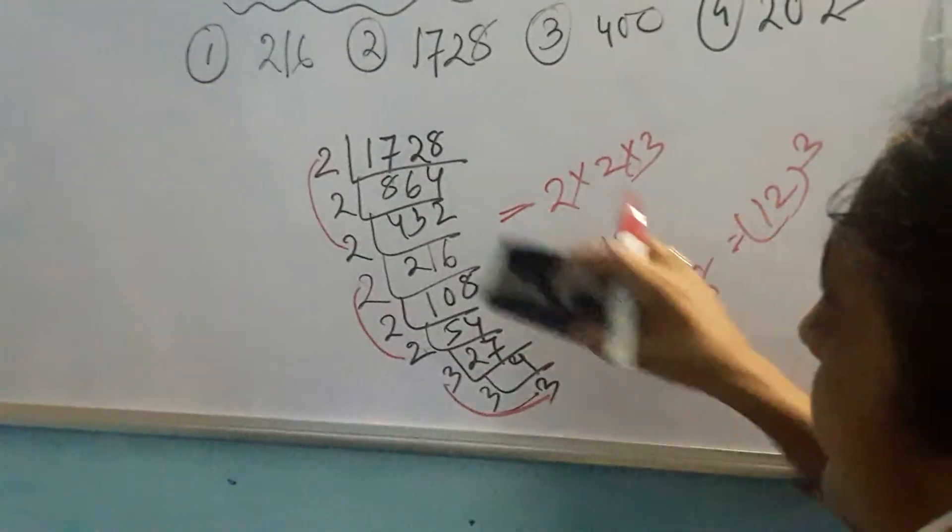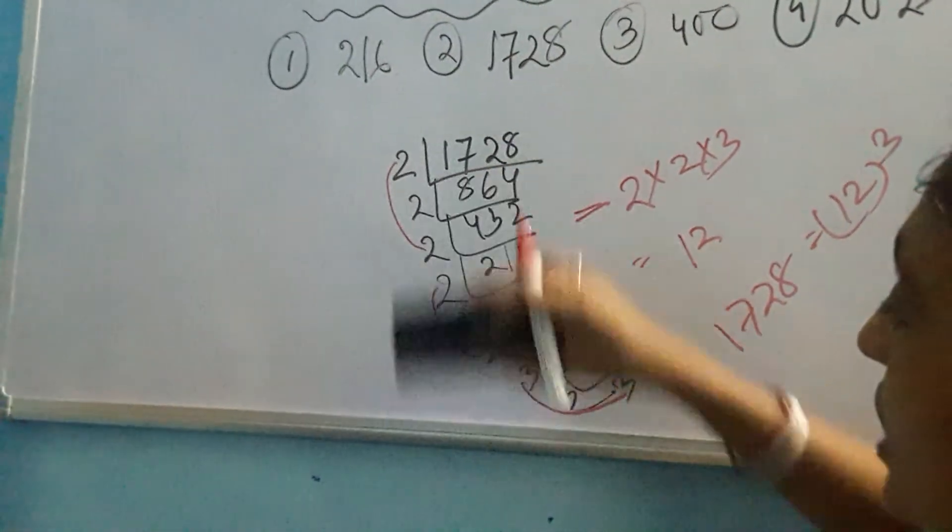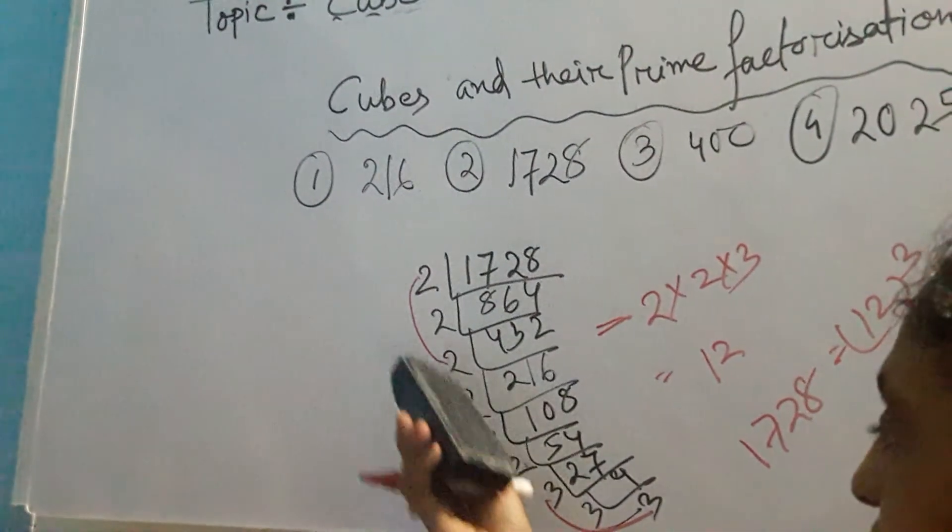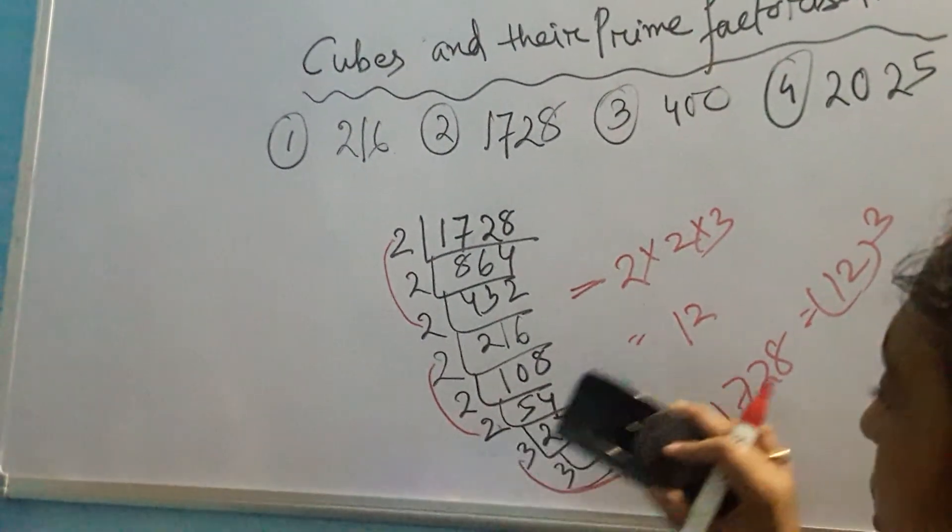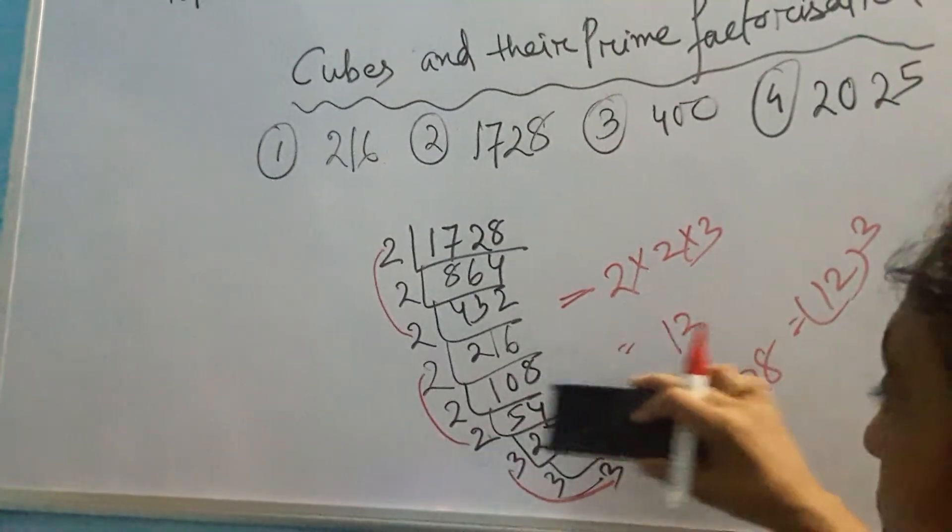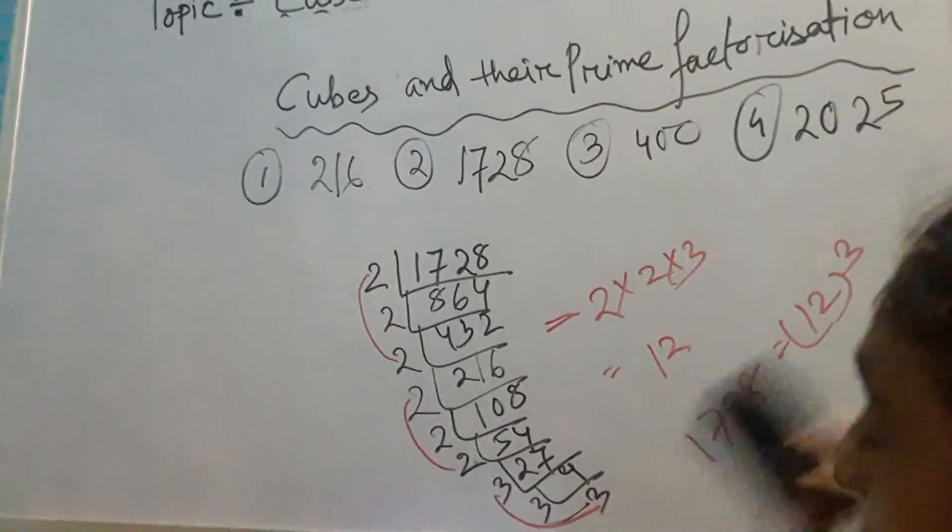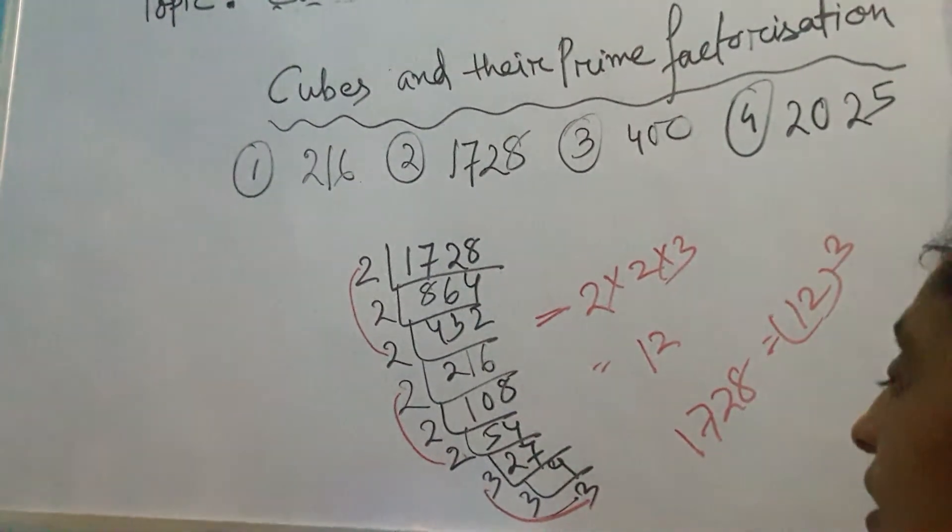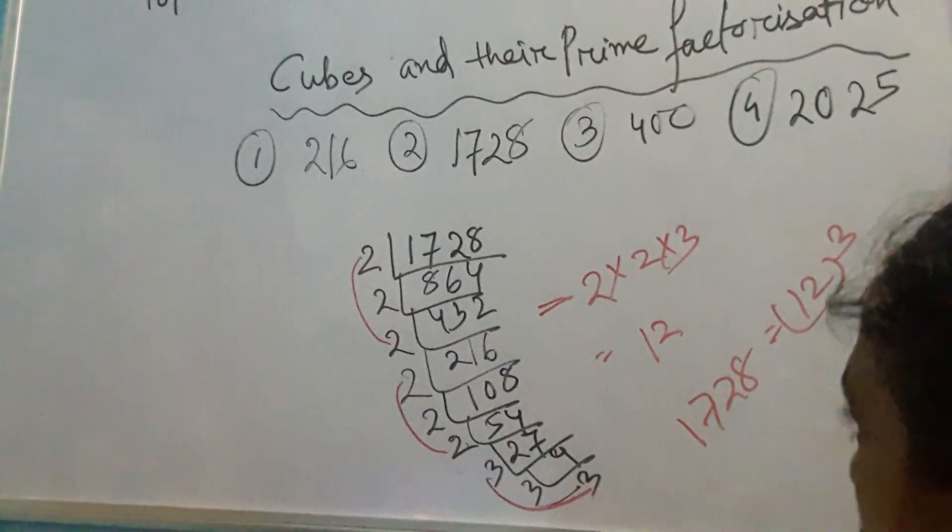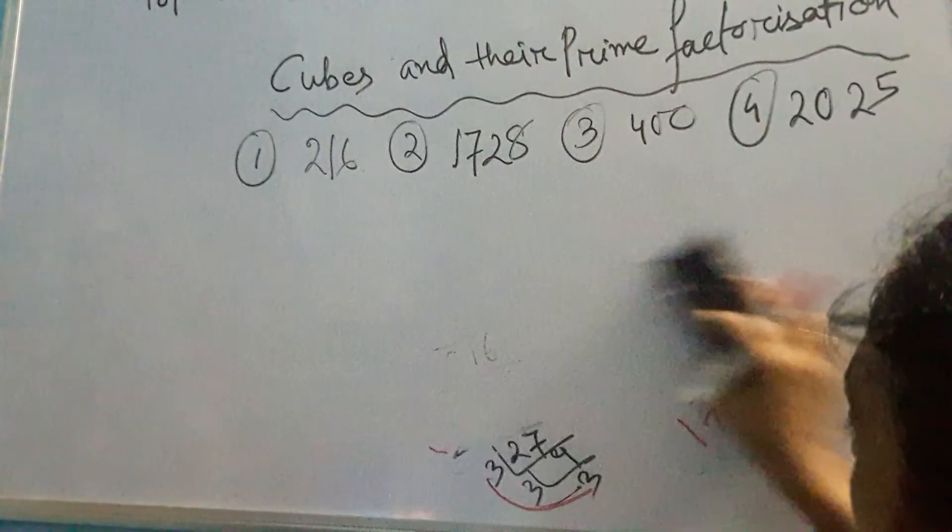Now come to the next one. In this case, you have seen none of the numbers were unpaired. All are there in 3, 3. In each group, there were 3, 3. So we have taken that 1, 1 from each group and we have found out that yes, this is a cube of that particular number. But when we are not getting a complete group, that time we can say it is not a perfect cube. Let us come to the next example.